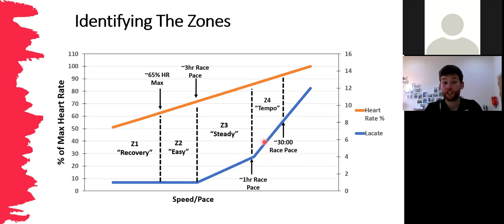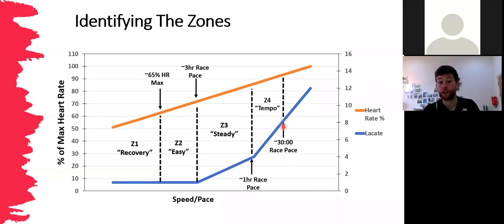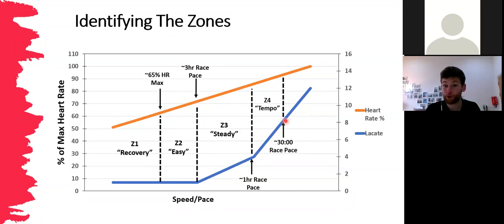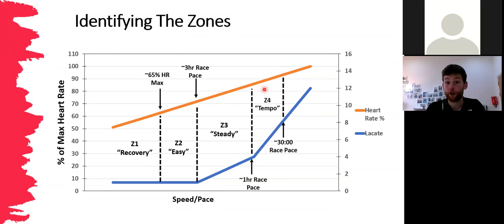Zone four, or tempo, sits just above the lactate turn point up to about 30-minute race intensity. Lactate has risen from roughly four mmol/L to about eight mmol/L. Heart rate is from 85–87% up to about 90–92% of heart rate max. You could say a few words but not really talk or sing. It's really getting quite hard, but you can still sustain this for up to an hour at the lower end of the zone, or 30 minutes at the higher end.